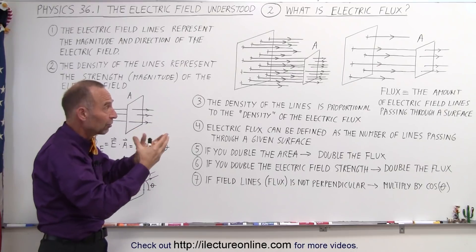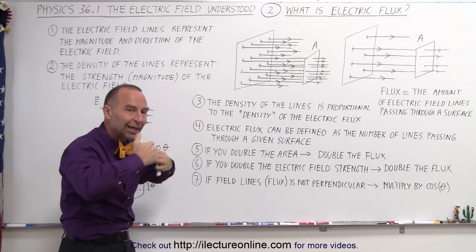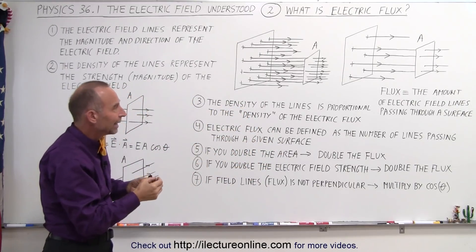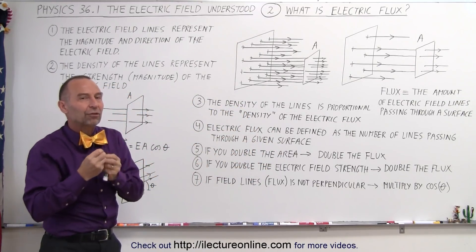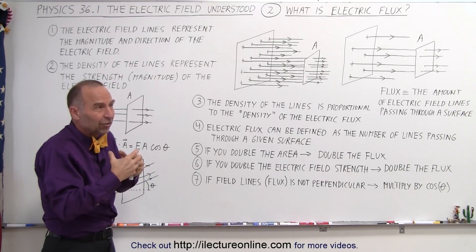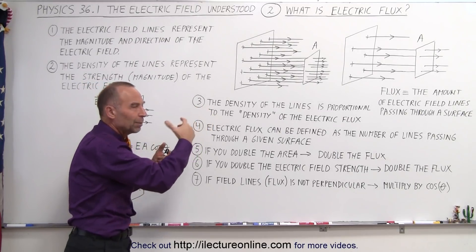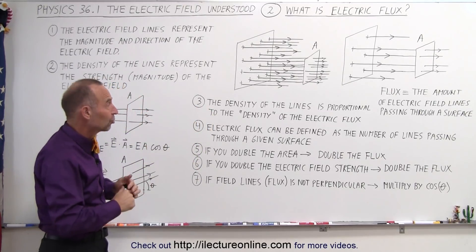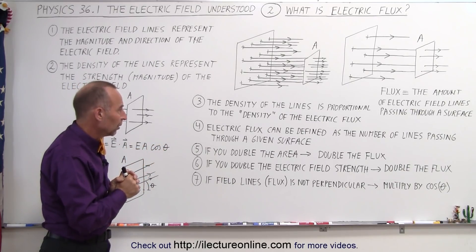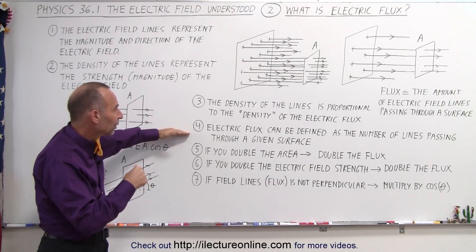It could be a surface, it could be a window — it doesn't matter what it is. We take a certain area, and the amount of electric field lines going through that window or surface is then defined as the electric flux. It's not a one-to-one correspondence because there's no real definition for the number of electric field lines that should be emanating from a number of charges, but at least it's proportional. So the electric flux can be defined as being proportional to the number of lines passing through a given surface.